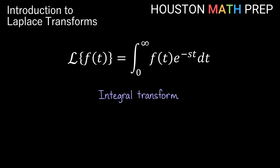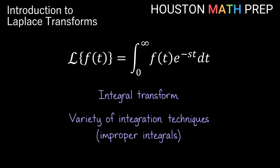Our definition for the Laplace transform of a function is an integral transform. It's the definite integral from zero to infinity of our function of t times e to the negative st, dt. This integral transform takes our function of t and changes it into a function of s. We're integrating a function of t multiplied by e to the negative st, which is a function of both s and t. When we integrate and plug in our bounds using our limit, the t's will become values and we'll be left with a function of s. When computing these integrals, it's important to be familiar with improper integrals, and you'll see a variety of integration techniques depending on what your f of t is — you may be using some identities or integration by parts, etc.